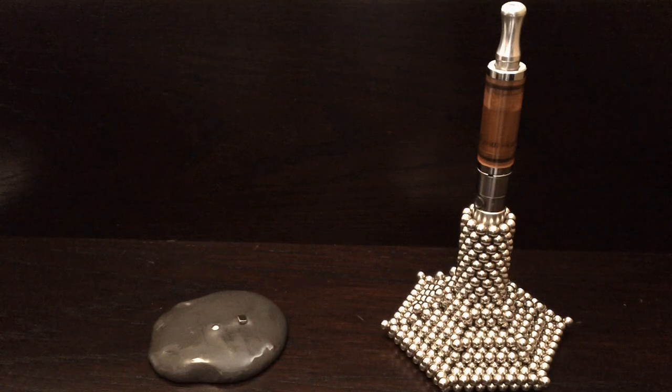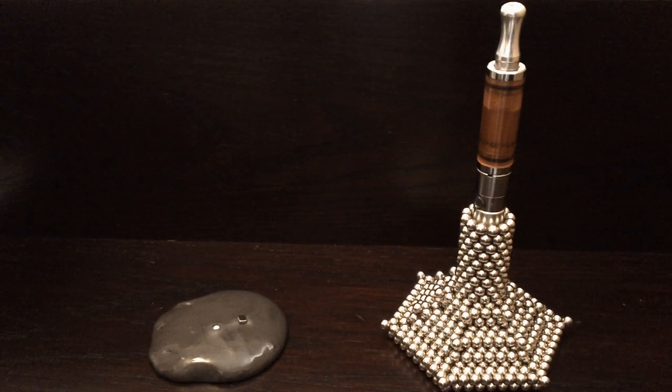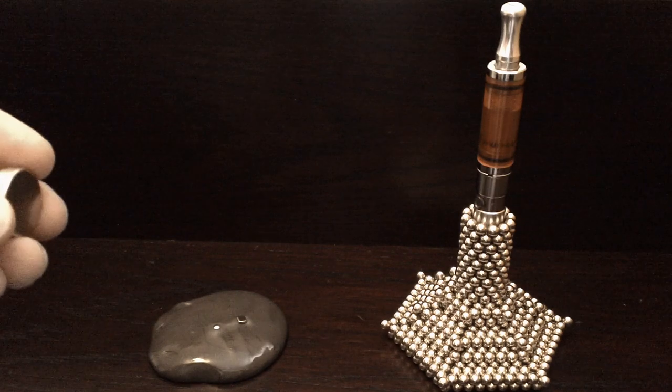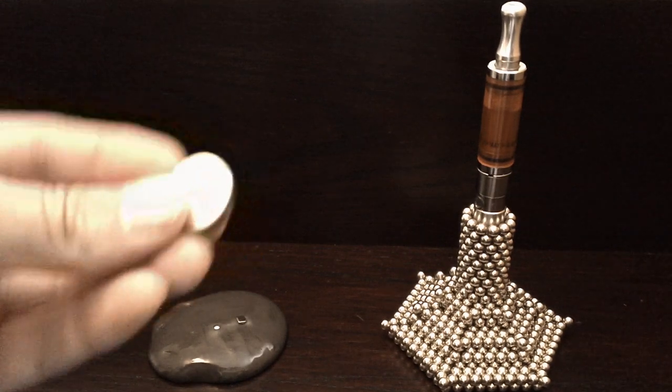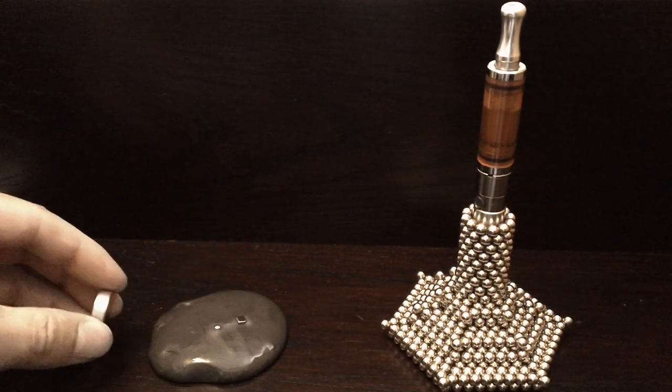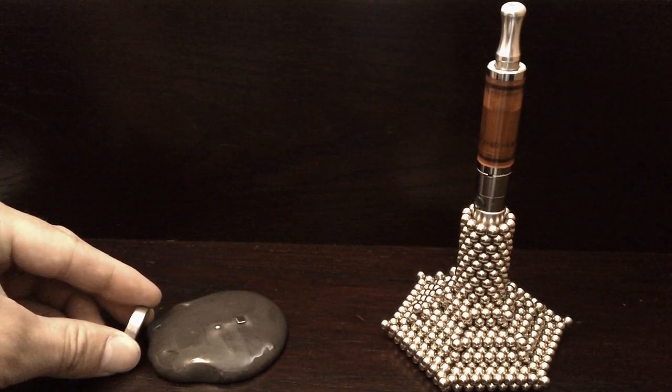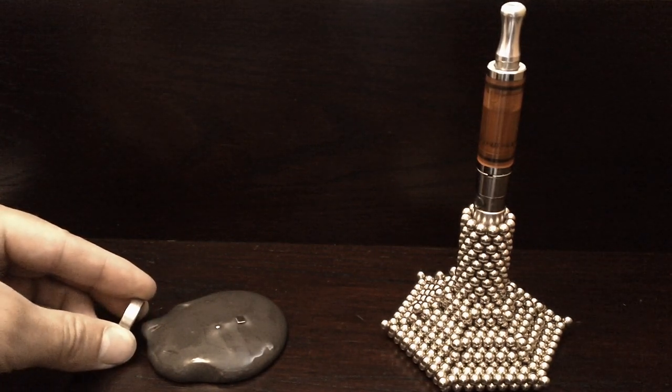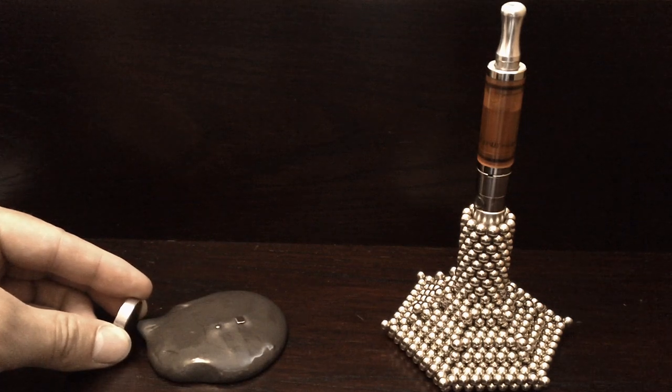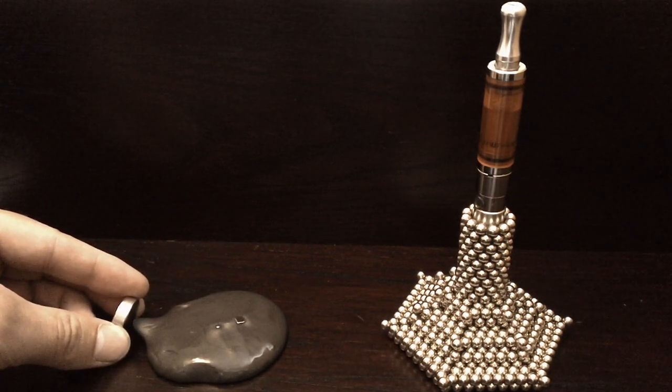And another cool thing you can do with it. Get yourself a quite strong magnet. You can do this with the Buckyballs as well, but a big strong magnet like that has more of an effect. Put that close there. Look what happens. A big old worm comes out chasing after the magnet.